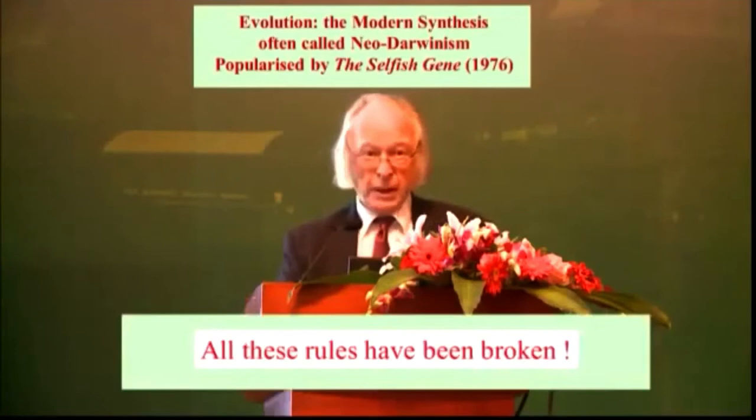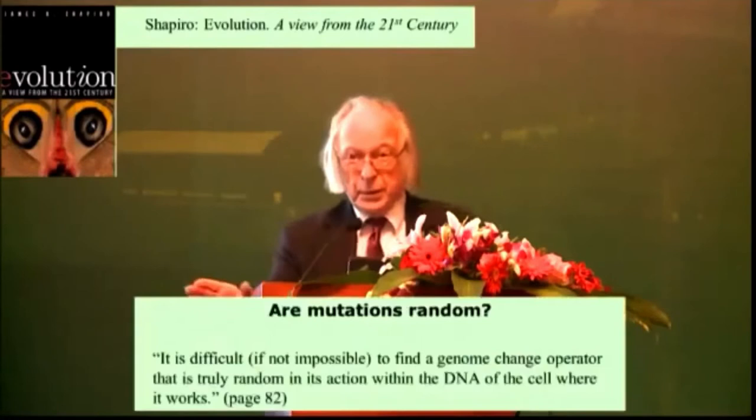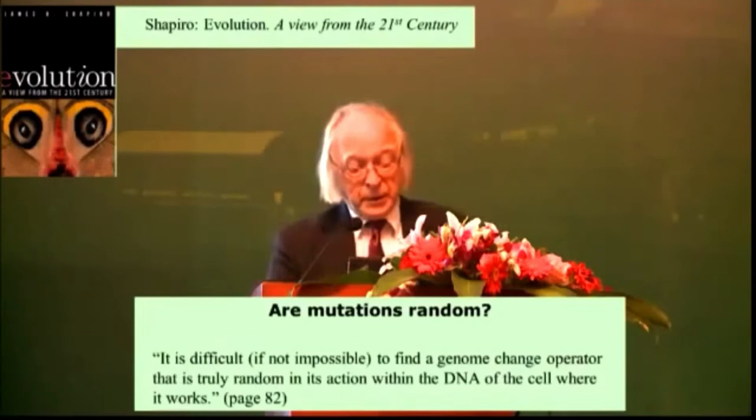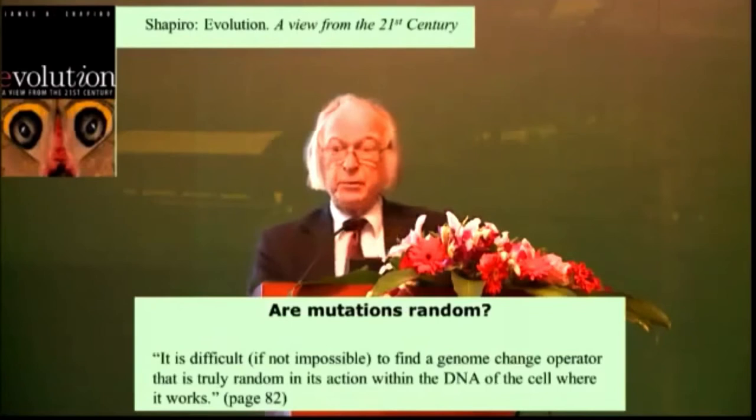First of all, are mutations random? A very important book to catch up with what is happening in the field of evolutionary biology is the book by the Chicago biochemist James Shapiro, Evolution: A View from the 21st Century. He writes, and gives detailed evidence with thousands of references on his website: it is difficult, if not impossible, to find a genome change operator that is truly random in its action within the DNA of the cell. All careful studies of mutagenesis find statistically significant non-random patterns of change. In other words, there are hot spots in the genome. Moreover, the frequency with which those changes occur can respond to what the organism is doing and what its environment is doing.